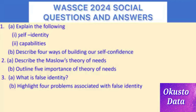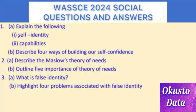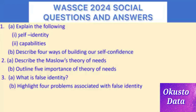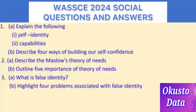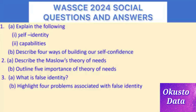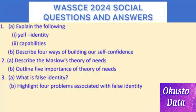Question 1: Explain the following — (i) Self-identity, (ii) Capabilities. (b) Describe four ways of building our self-confidence. Question 2: (a) Describe Maslow's theory of needs, and (b) list five importance of the theory of needs.